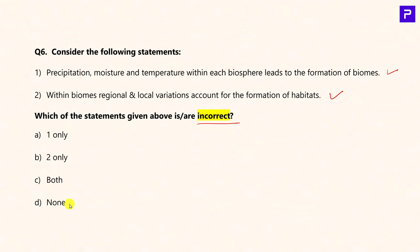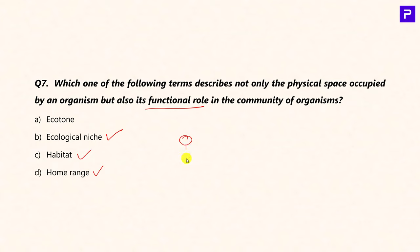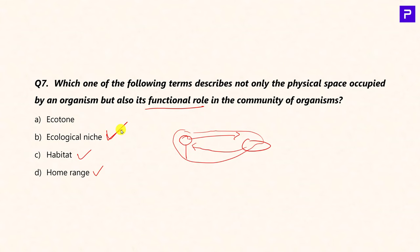Question 6 (previous UPSC paper): Which of the following terms describes not only the physical space occupied by an organism but also its functional role in the community? The answer is ecological niche. Ecotone is a transition zone between two biomes; habitat is the preferred environment for a species; and home range is the entire range in which a species operates — for example, a bird may live in a tree but travel to a distant lake in search of food and return in the evening.